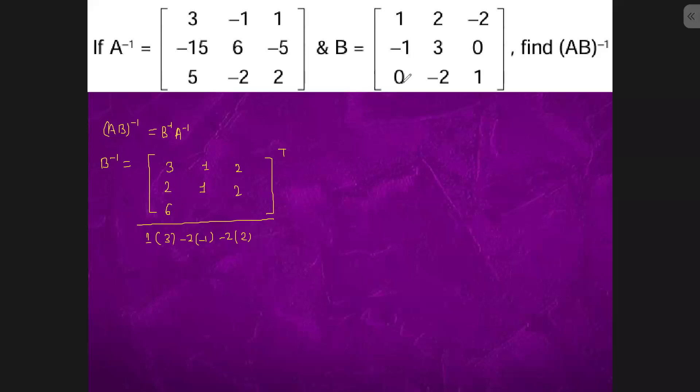Cofactor of minus 2 is minus 2 and this is third row second column, so minus of minus 2 is 2. So cofactor of 1 is 3 plus 2, 5.